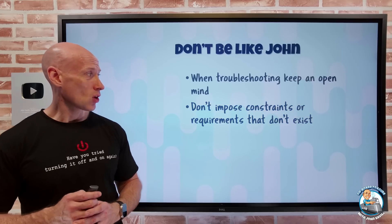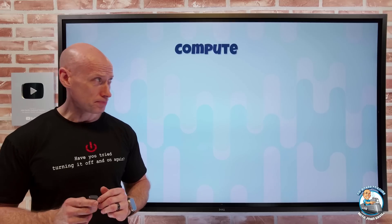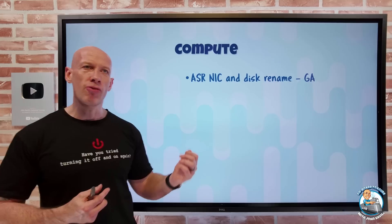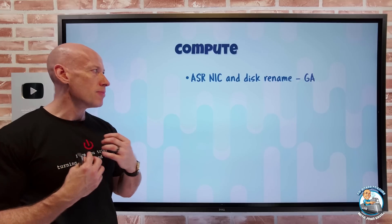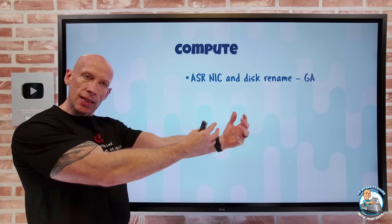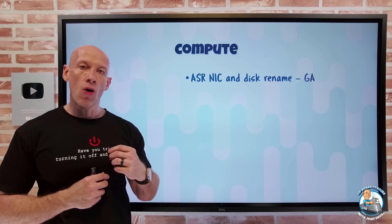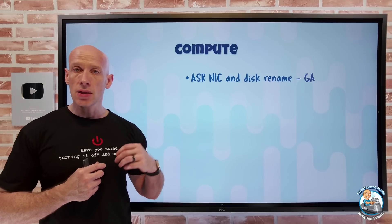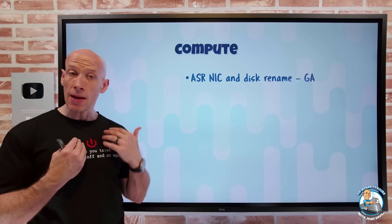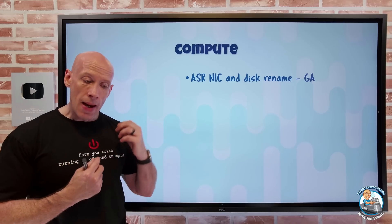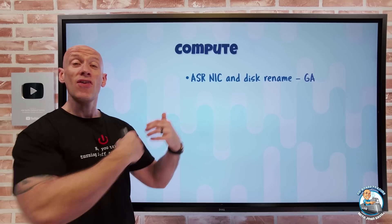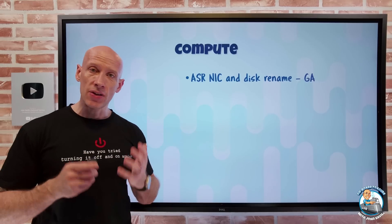Anyway, on to what's actually new. On the compute side, if you're using Azure Site Recovery to replicate VMs, now for that replicated VM when it gets created, you have the option of changing the disk and/or the network interface names. By default it would be the same as the source, but you can now as part of the protection configuration say that if it fails over, you want it to have a different name.